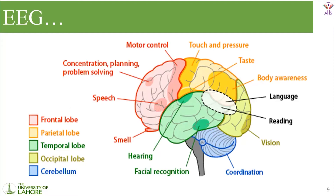The frontal lobe is mostly known for motor control, concentration, planning, problem solving, speech, and also some part of smell. The parietal lobe is mostly known for touch and pressure, taste, and body awareness. The temporal lobe is for hearing and facial recognition. The occipital lobe is for vision, and the cerebellum is for coordination — like whenever you meet someone, the coordination between you and that person is controlled by the cerebellum. There is also a region spanning the occipital, temporal, and parietal lobes that is specifically present for language and reading, located on the left hemisphere of the brain.